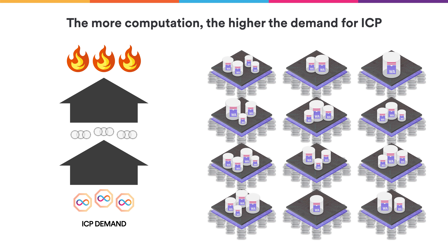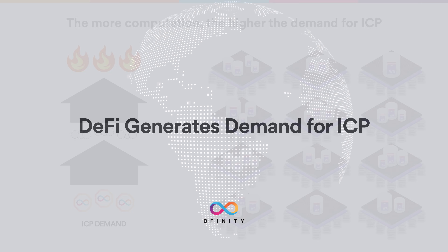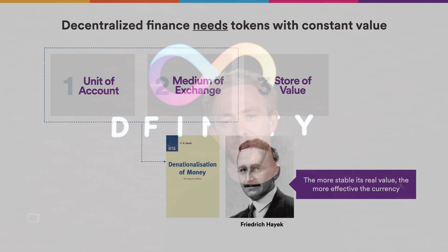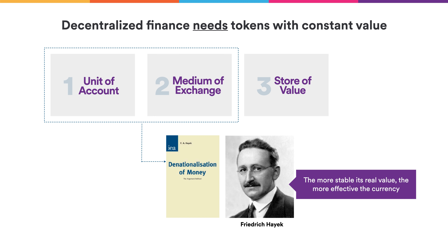But what else generates demand? Well, decentralised financial systems also drive demand. To understand why, it's important to know that decentralised financial systems need tokens with constant value to be maximally effective. For example, if someone borrowed ICP and its value doubled, then they would have to return more than twice what they were lent, which is no good. Currency plays three key roles: unit of account, medium of exchange, and store of value.